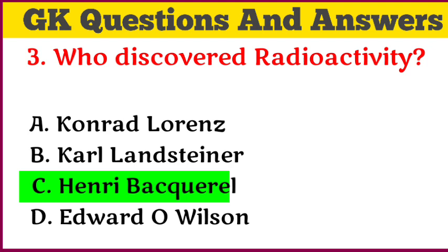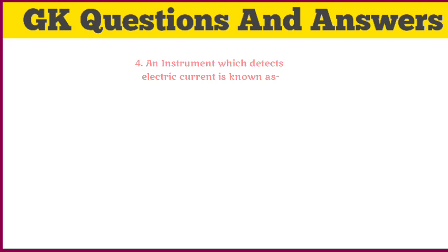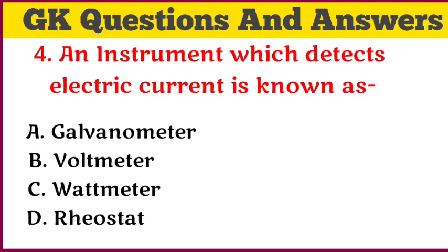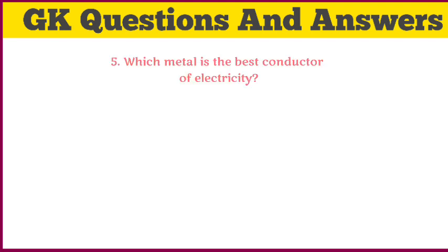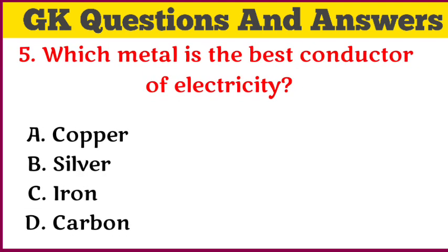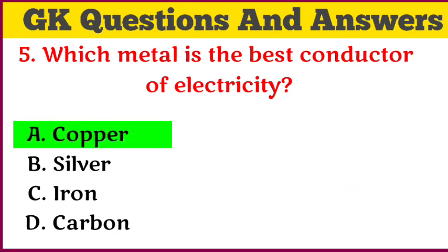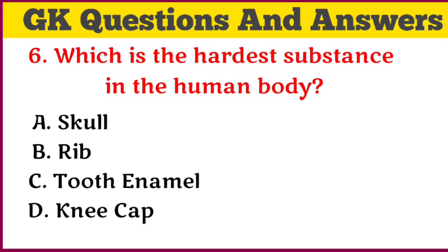Answer: Henri Becquerel. An instrument which detects electric current is known as? Answer: galvanometer. Which metal is the best conductor of electricity?